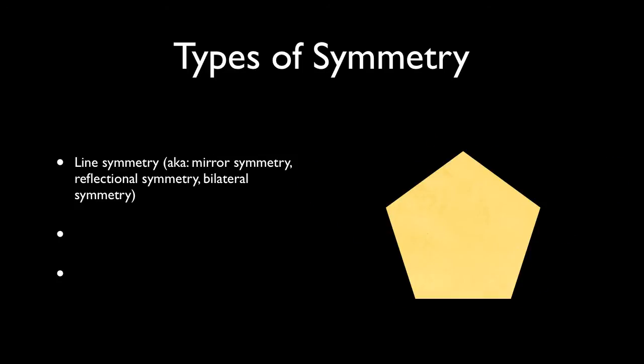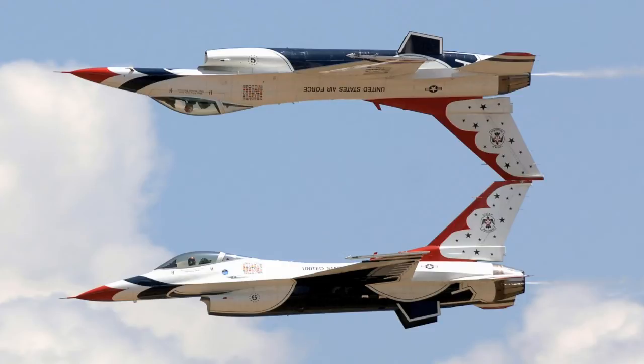This pentagon also has line symmetry, but it has more than just that up-down line of symmetry. It has five lines of symmetry. Here's a picture of the blue angels, two airplanes flying one on top of the other, kind of nice picture of reflection symmetry.